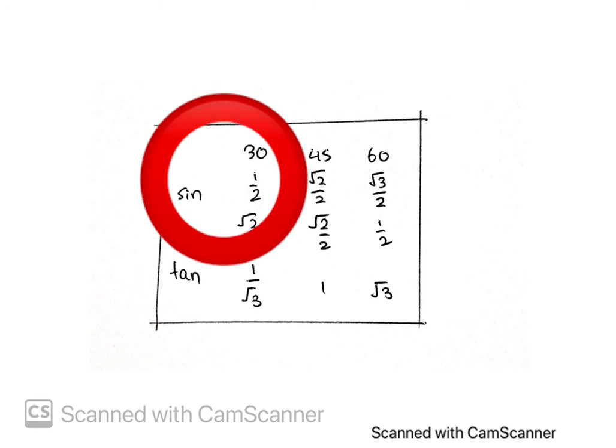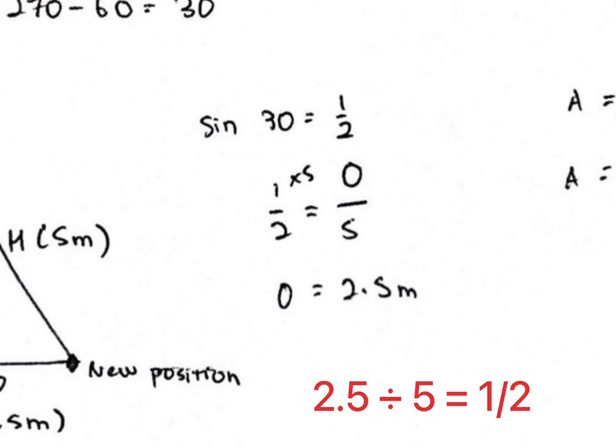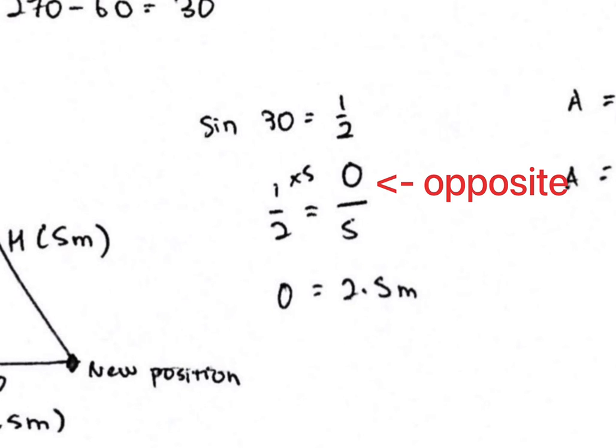The sin 30 equals to 1 over 2, which means the opposite O divided with H hypotenuse, you will get 1 over 2. By using this crossover method, 1 over 2 is equal to the opposite O over 5. The opposite will be 2.5 meter.